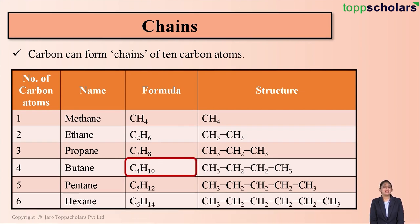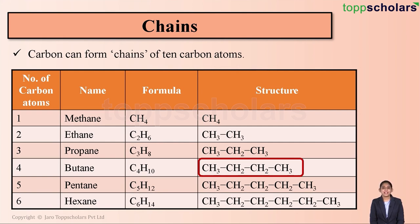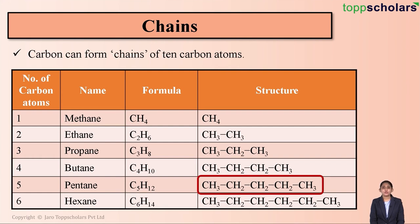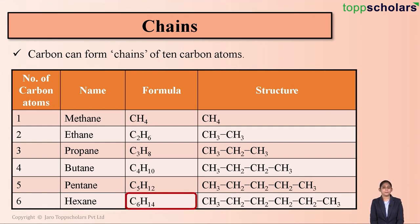The formula of butane is C4H10 — butane has four carbon atoms and 10 hydrogen atoms. The structure of butane is CH3–CH2–CH2–CH3. Pentane has five carbon atoms and 12 hydrogen atoms, with structure CH3–CH2–CH2–CH2–CH3. The next one is hexane, which has six carbon atoms, formula C6H14, and structure CH3–CH2–CH2–CH2–CH2–CH3.